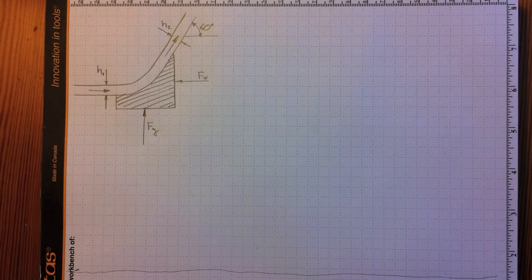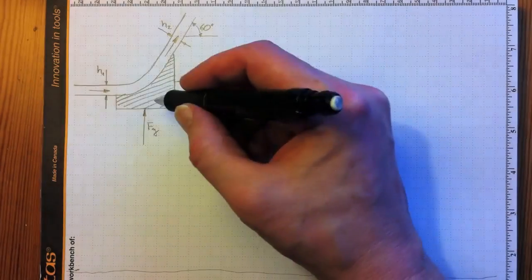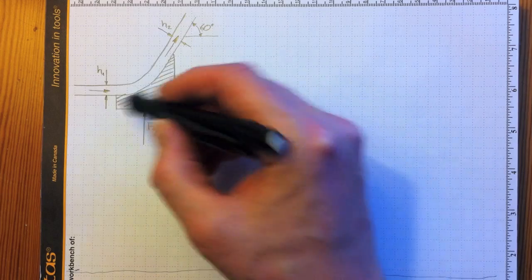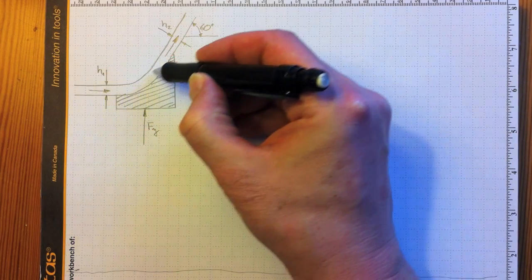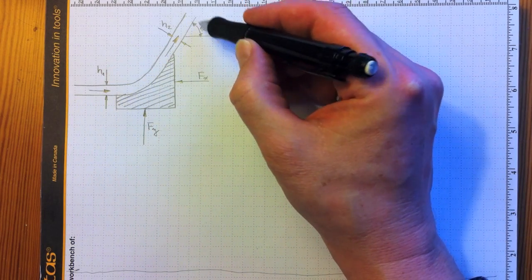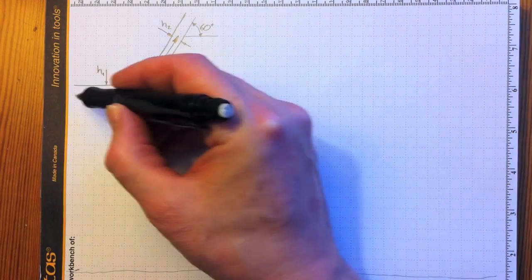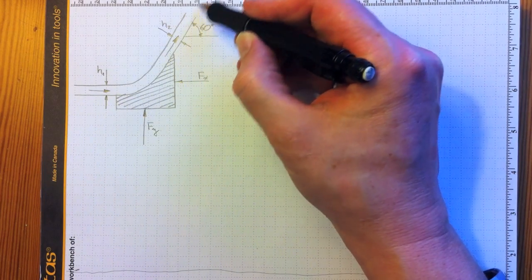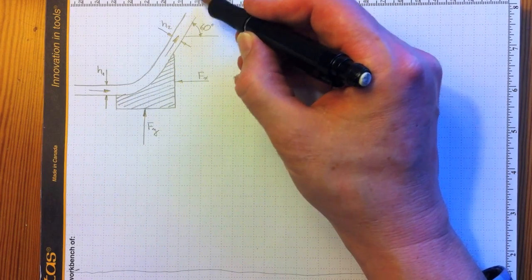Okay, let's try a little more complicated momentum problem. We've got a solid block sitting here and a jet of water hitting the block and turning through an angle of 60 degrees. So it comes in horizontally, goes out at 60 degrees from the horizontal.